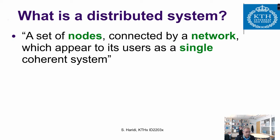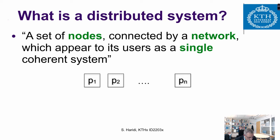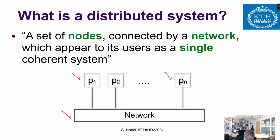The nodes could be local computers, operating system processes, mobile devices, or servers at a data center. These machines can only communicate through a network by sending and receiving messages to each other. As you can see from this picture, we will mainly abstract the notion of a physical machine and use the term processes. We have a set of processes p1 to pn, connected by a network.